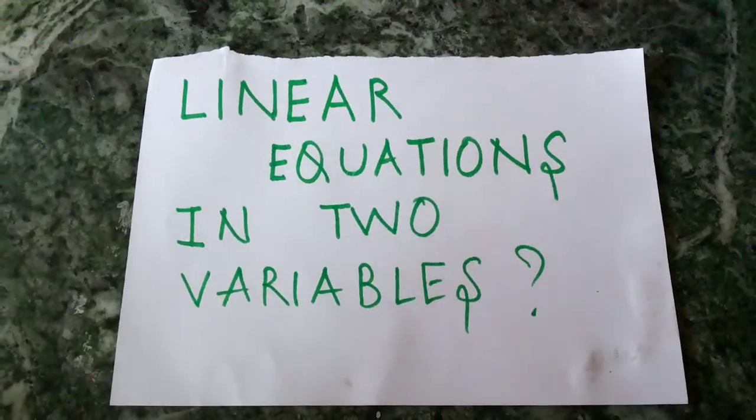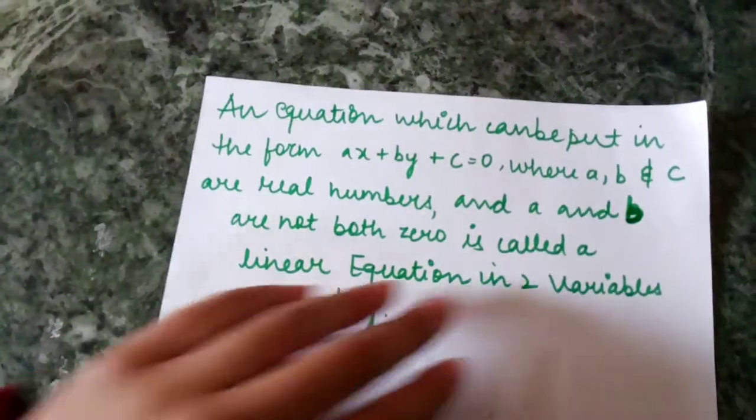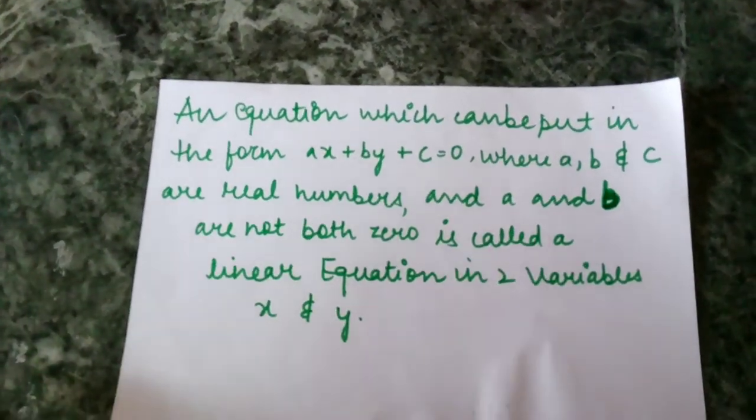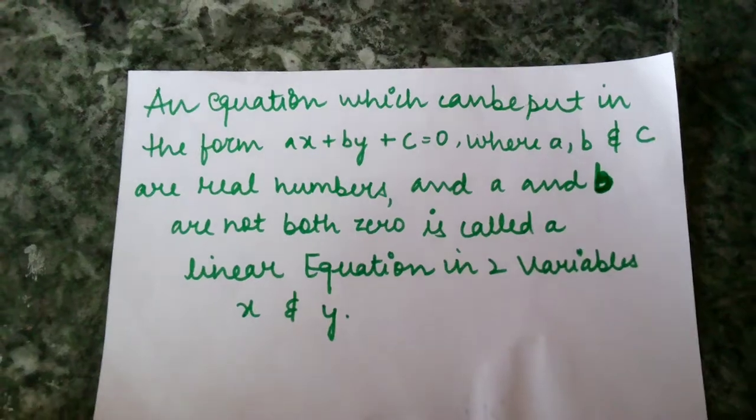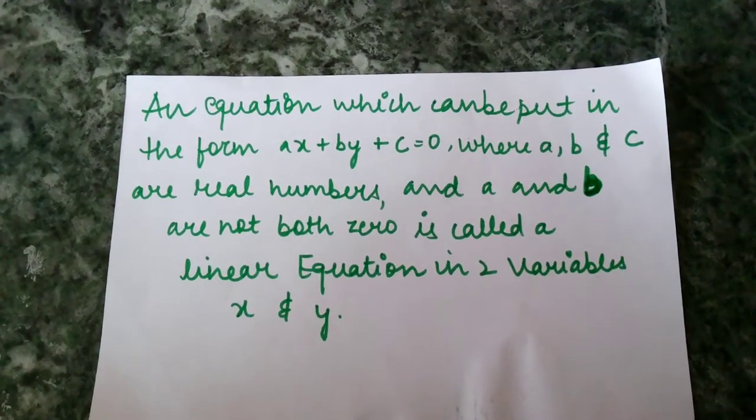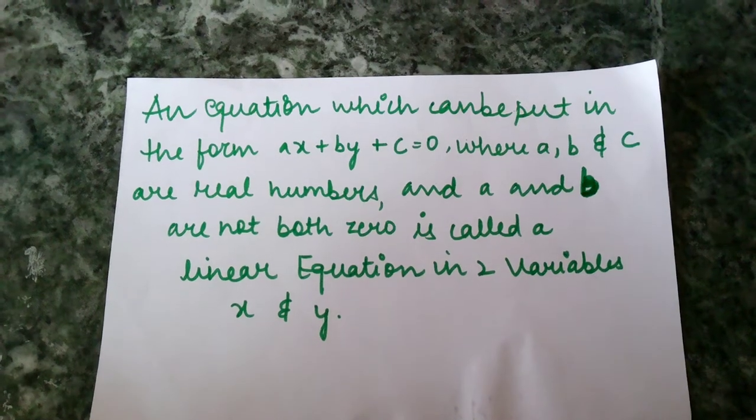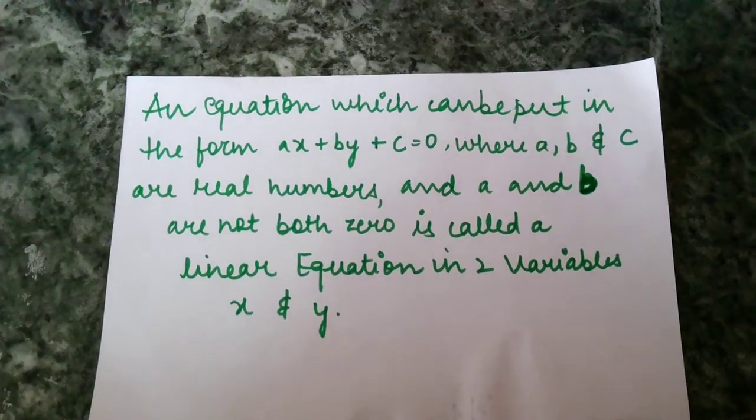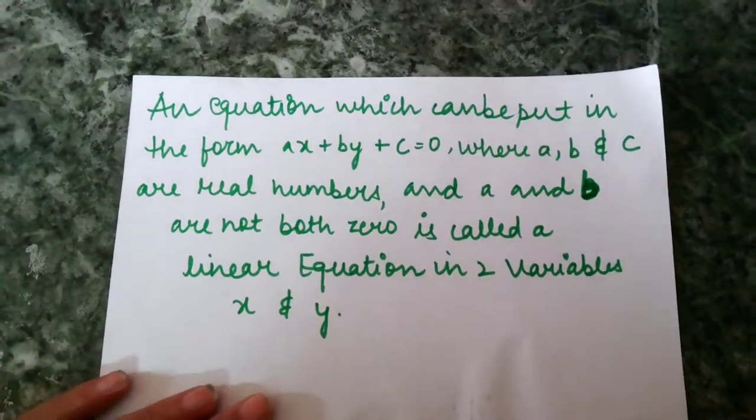What are linear equations in two variables? An equation which can be put in the form ax plus by plus c equals zero, where a, b, and c are real numbers and a and b are not both zero, is called a linear equation in two variables.